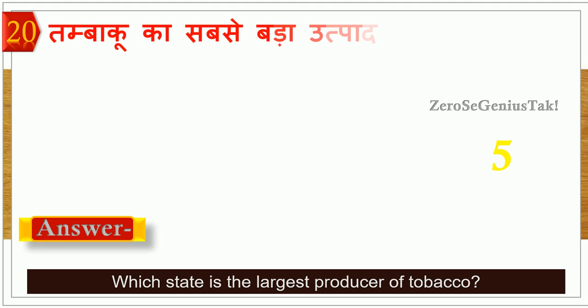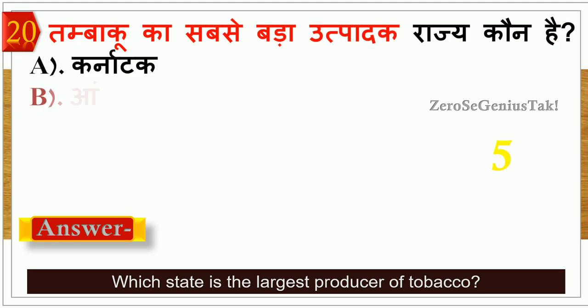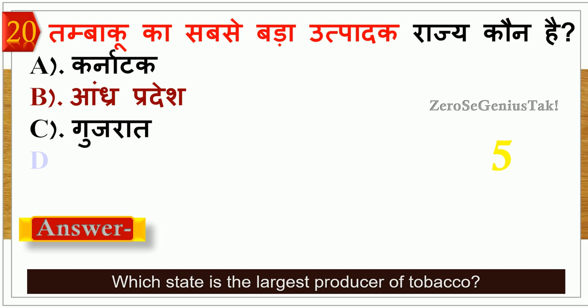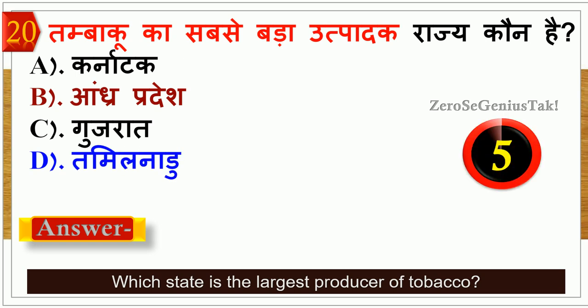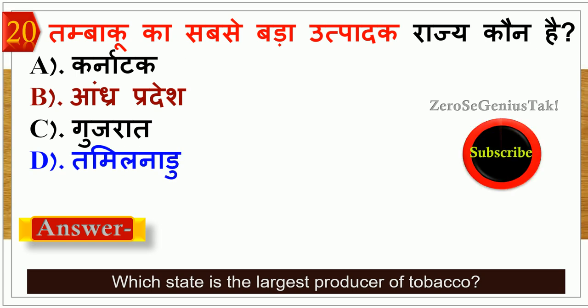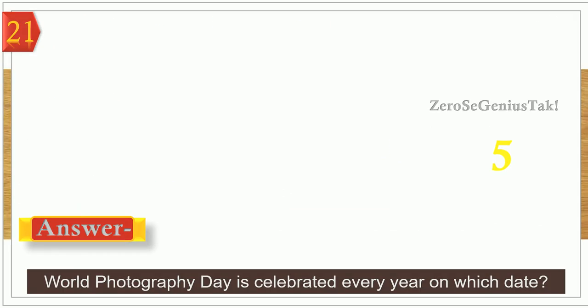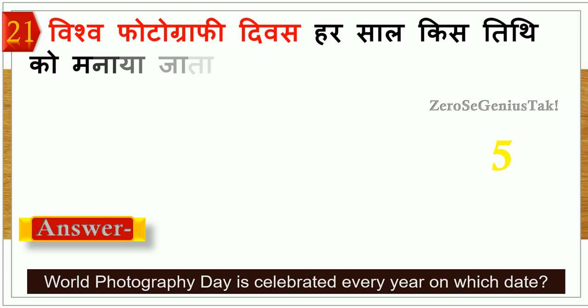The next question asks: which state has the best production in Mughal Kaal? The right answer is option number B — Andhra Pradesh. Andhra Pradesh is the best production state.